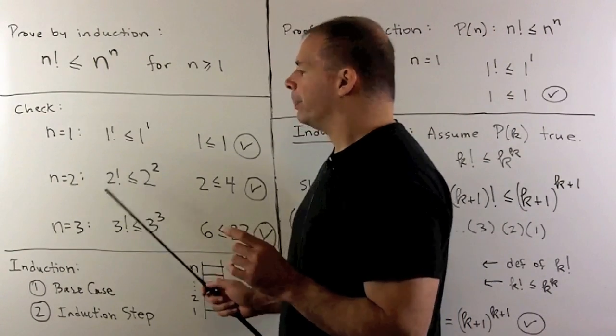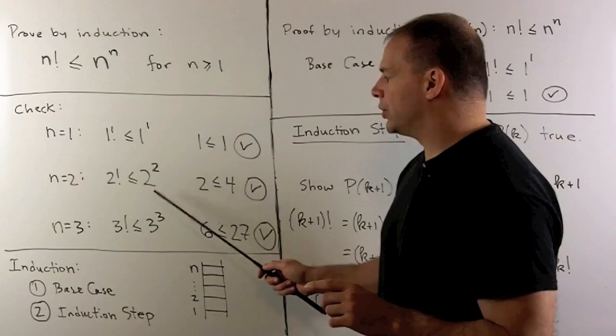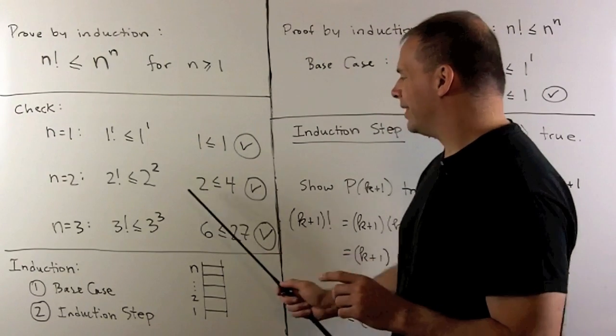For n equal to 2, we have 2 factorial equal to 2 times 1. On the other side, we have 2 to the second power, which is 4. That checks out also.